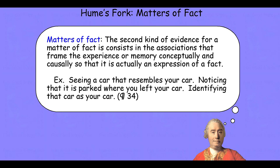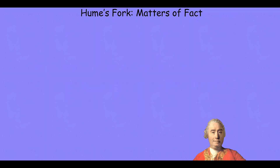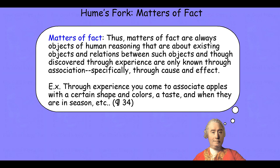So for example, seeing a car that resembles your car would be the association of resemblance. Noticing that it's parked where you left your car would be spatial contiguity. Identifying that the car is your car would be cause and effect. Thus matters of fact are always objects of human reasoning that are about existing objects and relations between such objects, and though discovered through experience are only known through association — specifically and importantly through cause and effect associations. So through experience you come to associate apples with a certain sort of shape, a certain set of colors, a certain kind of taste, a certain seasonality, and all of these together are through cause and effect associations used to create the notion that there are these things called apples.